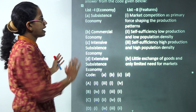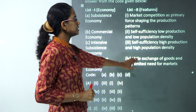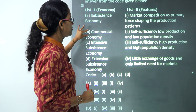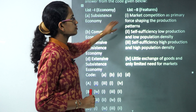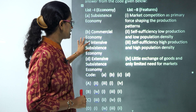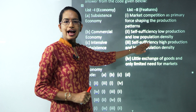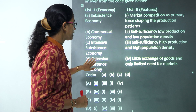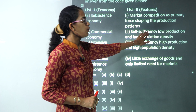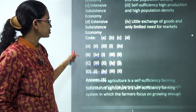The next question requires you to match features with the economy type. Subsistence involves little exchange of goods and only limited needs for the market. Commercial economy involves market competition as the force that shapes production patterns. Intensive subsistence is related to high population and high production, while extensive subsistence is related to low population density and low production because it is spread over a huge area.